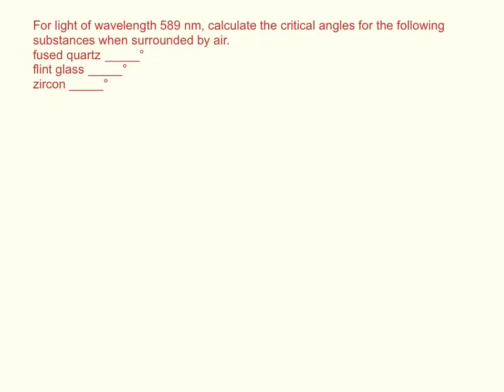For light of wavelength 589 nm, calculate the critical angles for the following substances when surrounded by air. So the first substance is fused quartz, flint glass, and zircon.